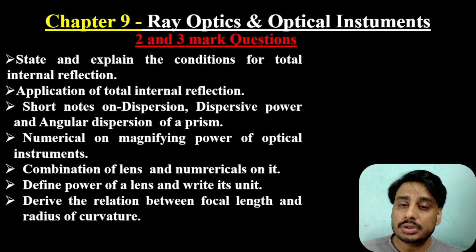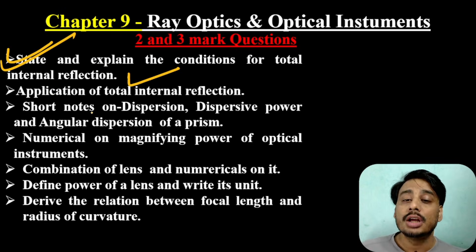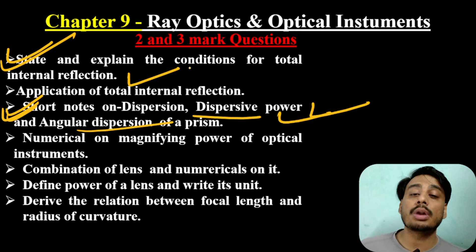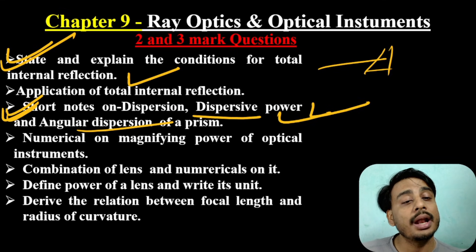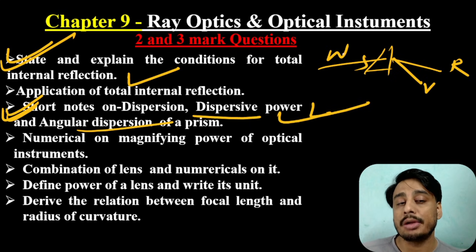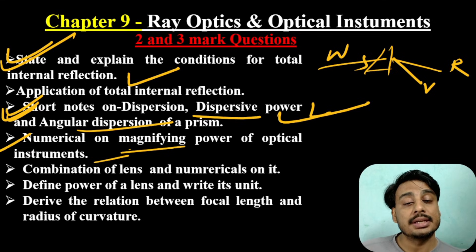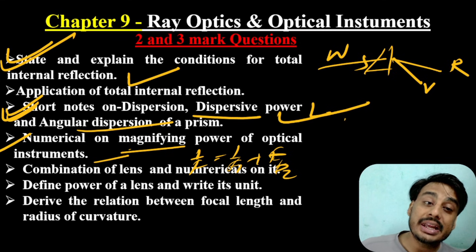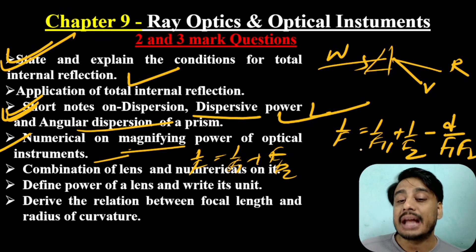This is an important question section: we explain the conditions of total internal reflection, its applications, dispersion, angular dispersion, and the splitting of white light. This covers total internal reflection and dispersion. Also important: numericals and magnifying power of optical instruments — simple microscope, compound microscope, and telescope. Combination of lenses: 1/f = 1/f1 + 1/f2. Numerical and magnifying power of optical instruments.